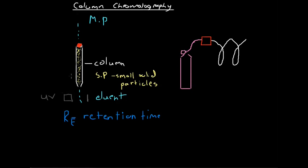If we use the same column with the same amount and type of stationary phase, same mobile phase, same everything, and we put the same component in the top of the column, it will have the same retention time — it will take the same amount of time to get out the bottom of the column. So that's a general outline of the ideas surrounding column chromatography. Now we're going to look at the two more specific categories of column chromatography.